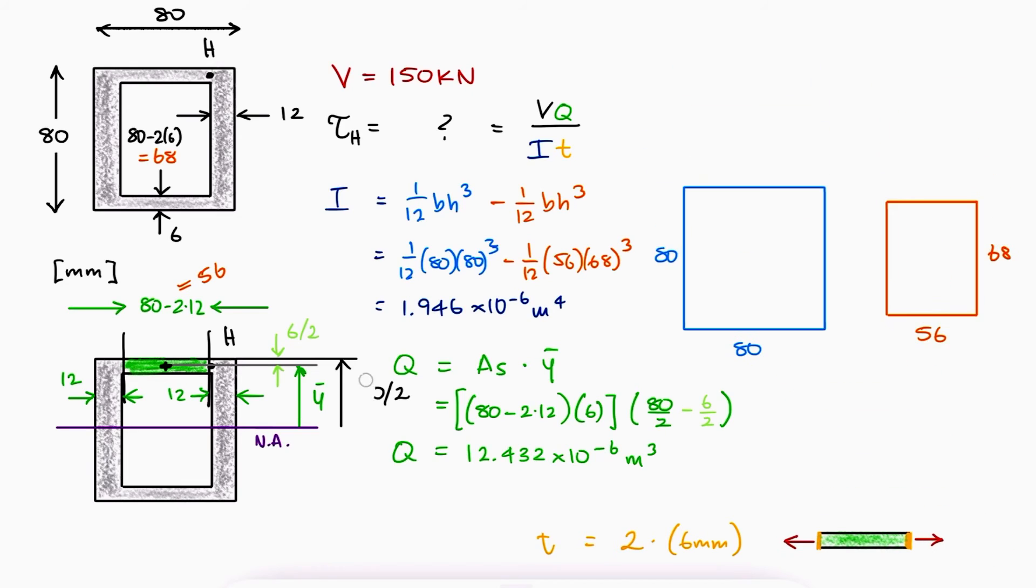With the value for the second moment of area, we can substitute all values in the shearing stress equation. The shearing stress at location h would be 79.9 MPa. For more examples on shear flow and thin-walled members, as well as the main videos of the mechanics of materials course, make sure to check out the links in the description below.